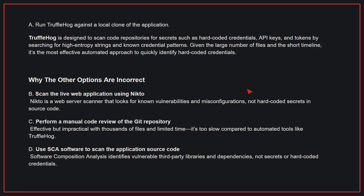Why the other options are incorrect: B, scan the live web application using Nikto — Nikto is a web server scanner that looks for known vulnerabilities and misconfigurations, not hard-coded secrets in source code. C, perform a manual code review of the Git repository — this is effective but impractical with thousands of files and limited time; it's too slow compared to automated tools like TruffleHog. D, use SCA software to scan the application's source code — software composition analysis identifies vulnerable third-party libraries and dependencies, not secrets or hard-coded credentials. Therefore, the correct answer is A.